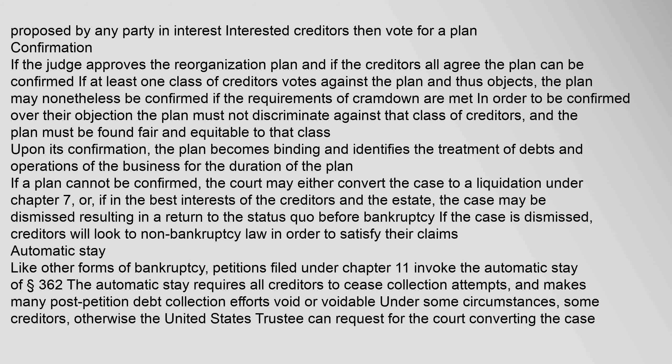With some exceptions, the plan may be proposed by any party in interest. Interested creditors then vote for a plan confirmation. If the judge approves the reorganization plan and if the creditors all agree, the plan can be confirmed. If at least one class of creditors votes against the plan and objects, the plan may nonetheless be confirmed if the requirements of cramdown are met. The plan must not discriminate against that class of creditors, and must be found fair and equitable to that class.